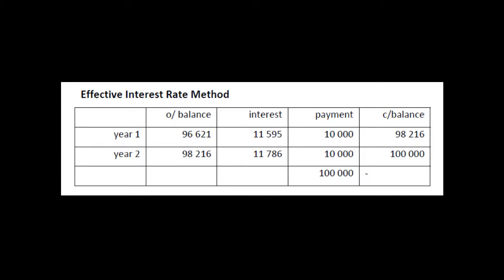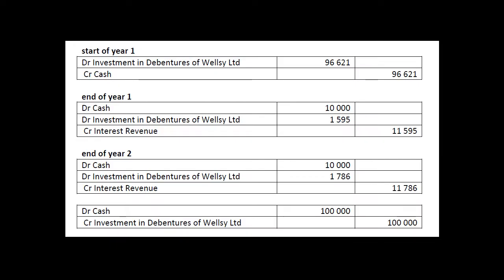So we've done that — let's have a look at the entries. At the start of year one, Elscoff has lent money, so they've credited cash and they've got some sort of financial asset. They've called it investment in debentures — you could call it just debentures or whatever it is — but it's a financial asset. And that is the number that we worked out above.